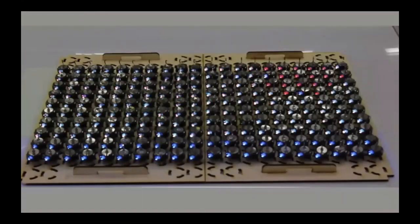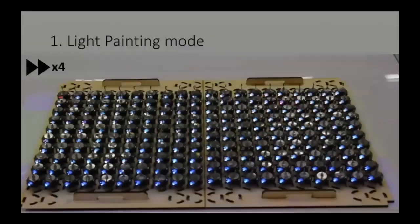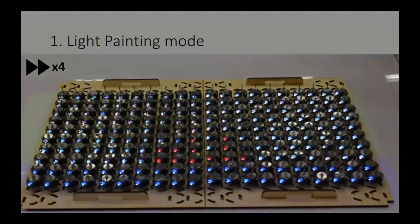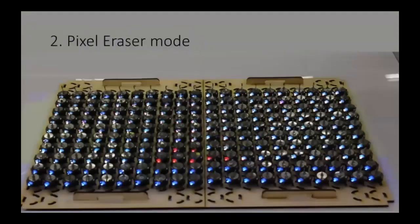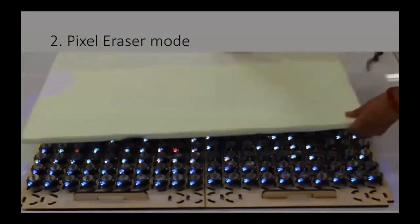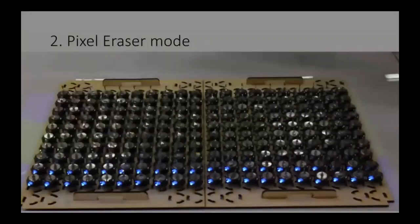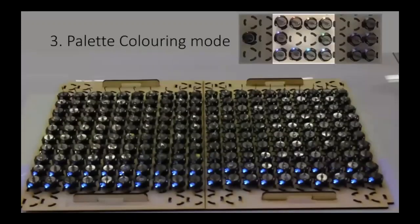Let's talk about the interaction modes that made this performance possible. Light painting mode is the first, where a GIF of the sunset was projected onto the robots. Then pixel eraser mode — the second mode — is used: whenever the robots detect a drop in ambient light, they turn off their LED.